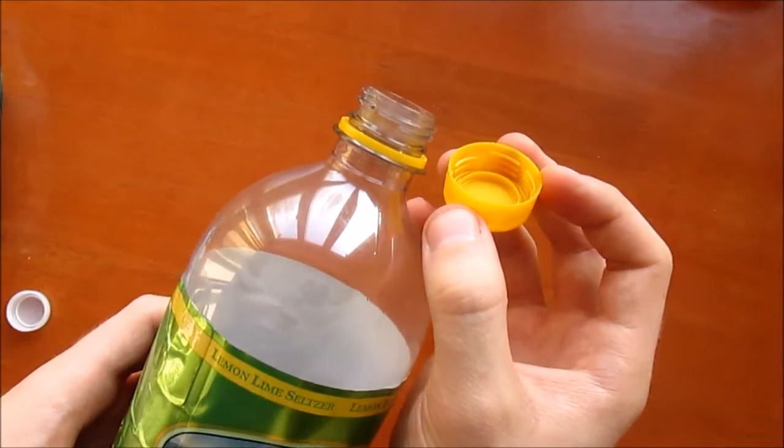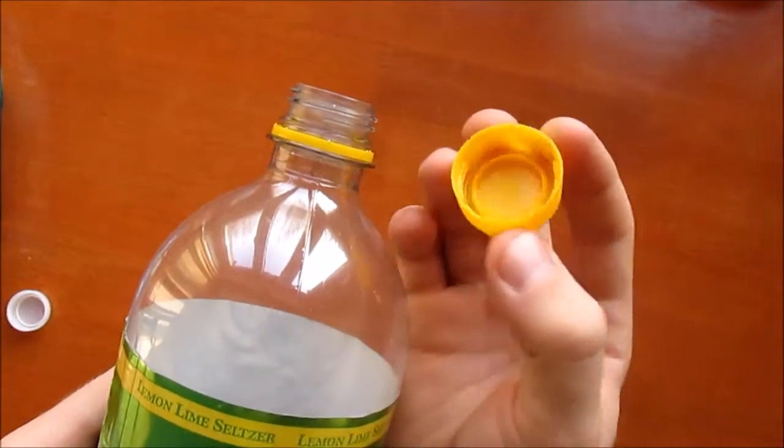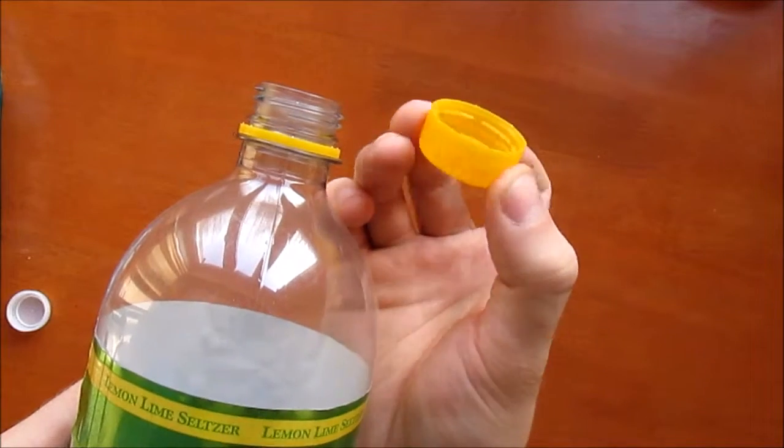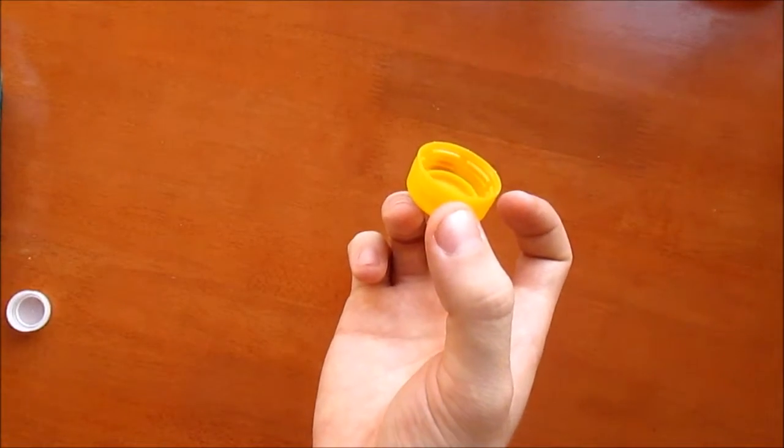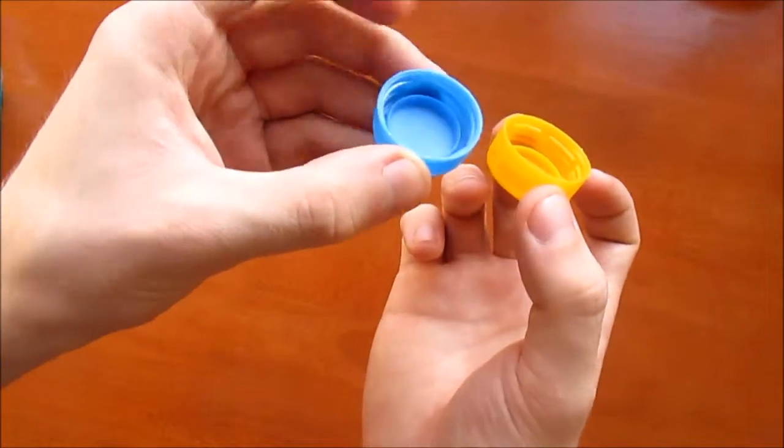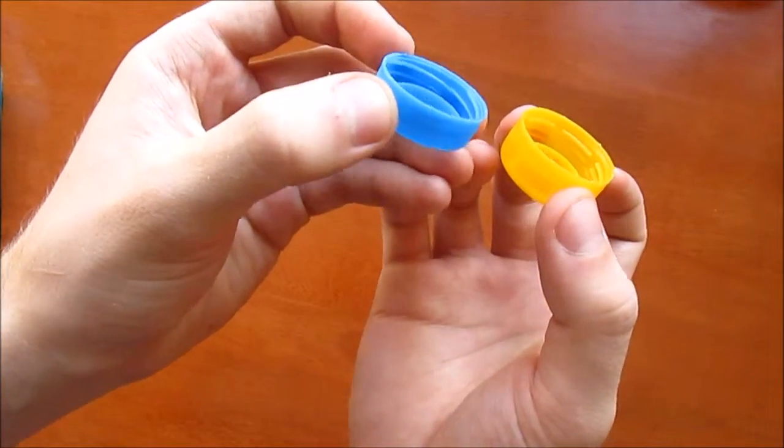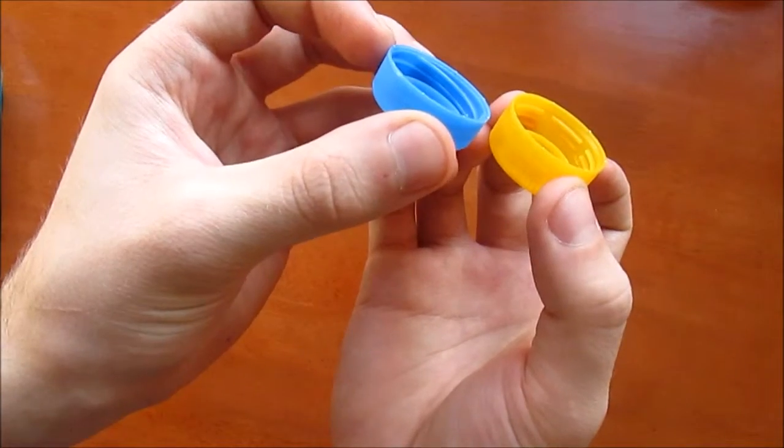This bottle here has threads which are on top of each other. When the threads are stacked on top of each other, they hang up when you try to spin it off and let the air leak out slowly. Comparing this cap to the cap on the left, the one on the left has the threads which are faced upwards, which will work efficiently for this project.